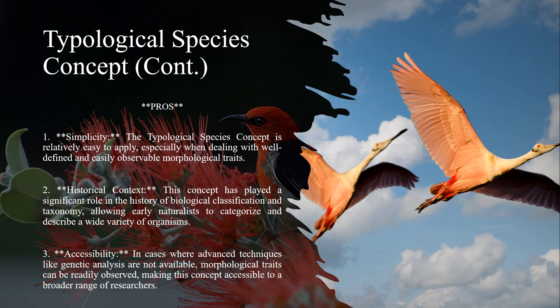There are some pros and cons for the typological species concept. One of the most important advantages is its simplicity — it is relatively easy to apply, especially when dealing with well-defined and easily observable morphological traits. It also has significant historical context, having played an important role in the history of biological classification and taxonomy, allowing early naturalists to categorize and describe a wide variety of organisms. Lastly, its accessibility means that when advanced techniques like genetic analysis are not available, morphological traits can be readily observed, making it accessible to a broader range of researchers.